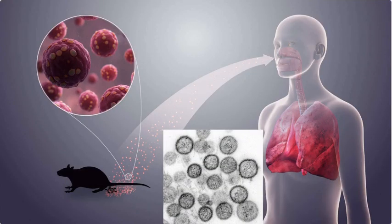Hantaviruses belong to a group of viruses transmitted to humans through contact with infected rodents, primarily deer mice, rice rats, and field mice. Different strains of Hantavirus cause various diseases, including Hantavirus pulmonary syndrome (HPS) and hemorrhagic fever with renal syndrome (HFRS).